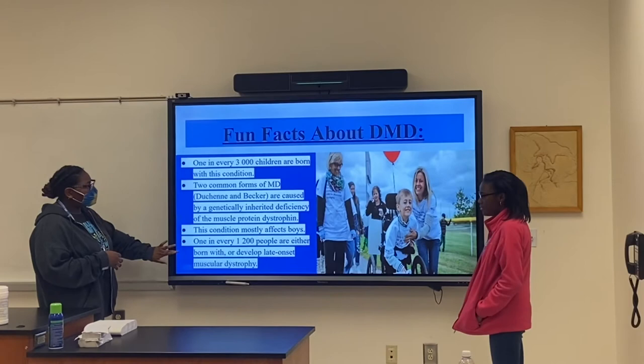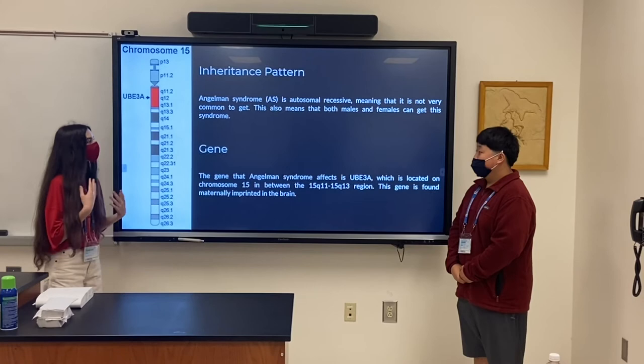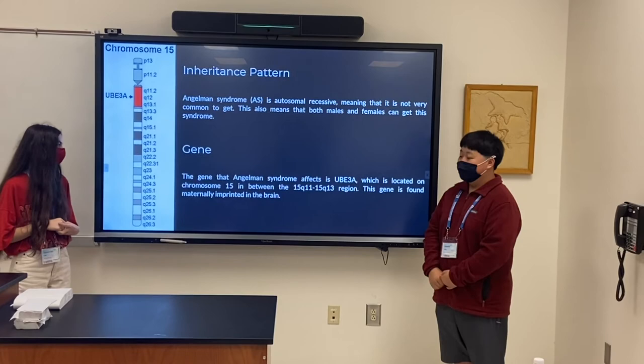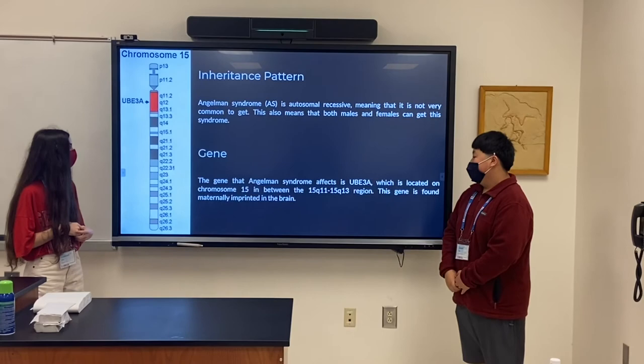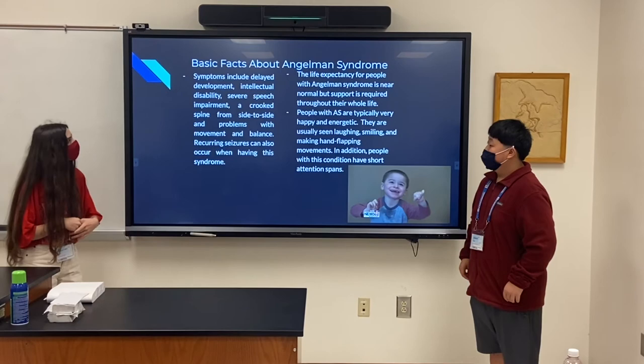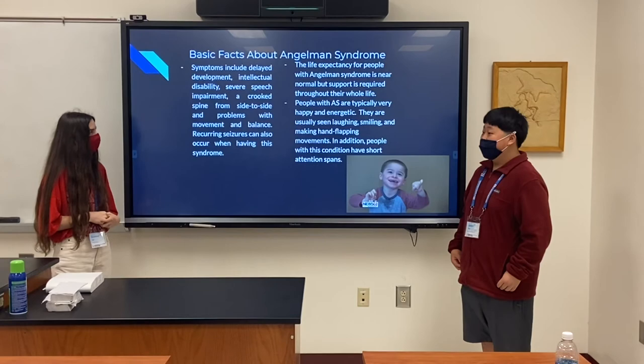I'm Sylvina Phyllis and I'm Joseph Tau, and this is Angelman Syndrome. Angelman Syndrome is autosomal recessive, meaning that it is uncommon to get, and that both males and females can get it. The gene that Angelman Syndrome affects is UBE3A, which is located on chromosome 15 on the long arm between the 15q11 and 15q13 regions. This gene is found maternally imprinted in the brain. Some symptoms include delayed development and speech impairment. Life expectancy for people with Angelman Syndrome is near normal, but support is required for their whole entire life.